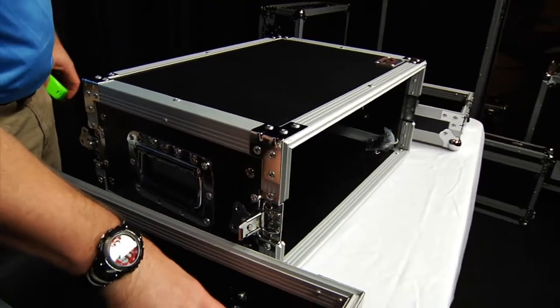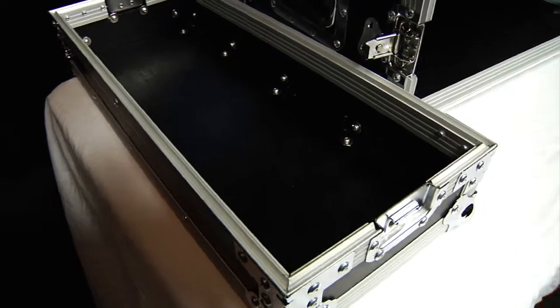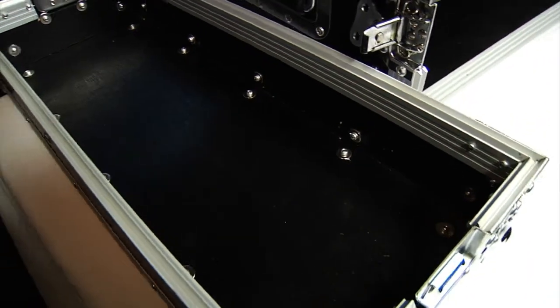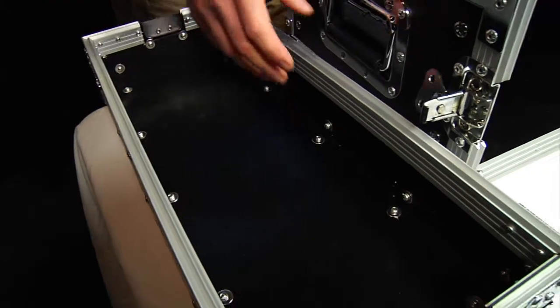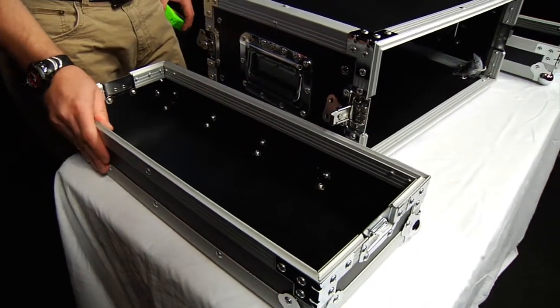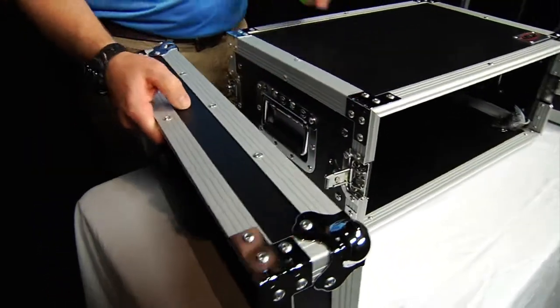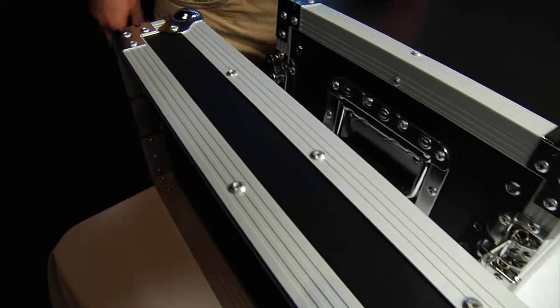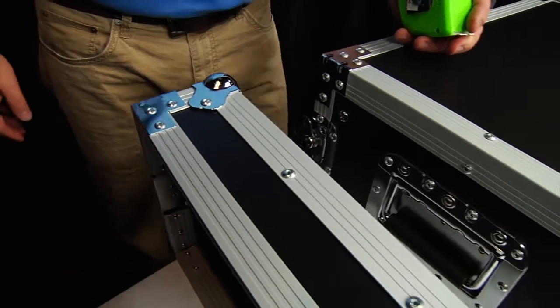It's got this plywood inside. It's a 3/8 inch marine grade plywood so it's a little bit thicker than some other cases you'll see out there on the market. It just adds a lot of stability and durability to this case. And then on the outside it's got this real nice professional looking black laminate that's glued to the outside of that plywood.